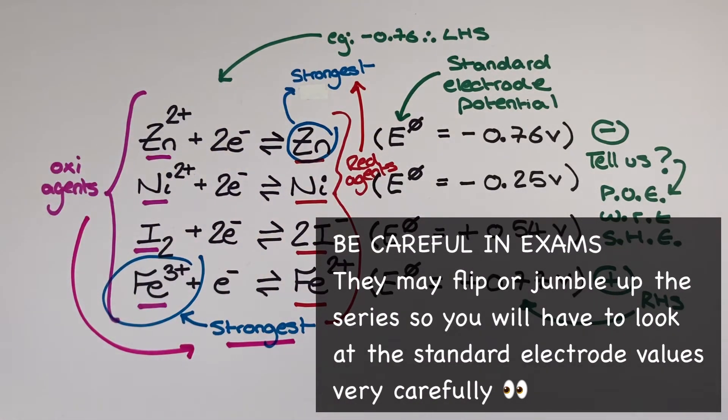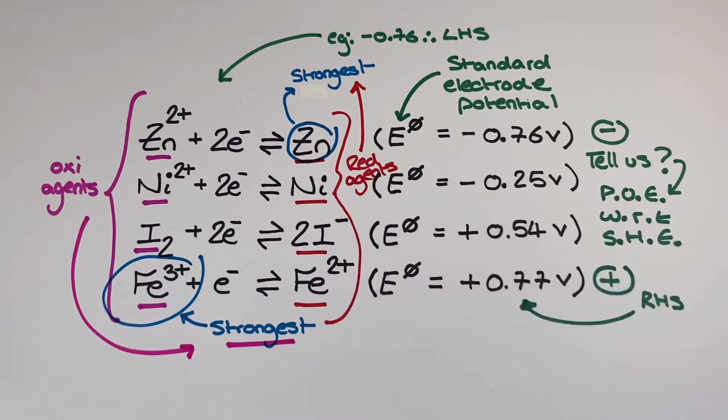Because the standard electrode potential of the zinc half equation is the most negative and so that tells me that the zinc has got the greatest tendency to donate electrons than anything else. The iron-3-ion is the most powerful oxidising agent because it's got the most positive standard electrode potential which tells me it's the most powerful electron acceptor in my electrochemical series.